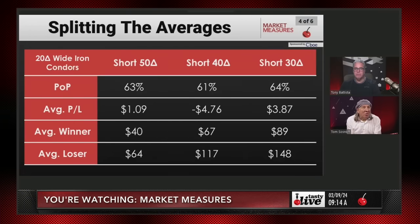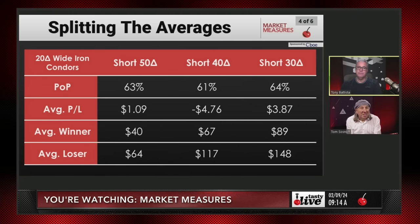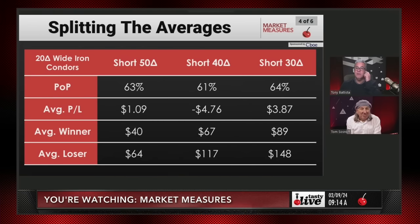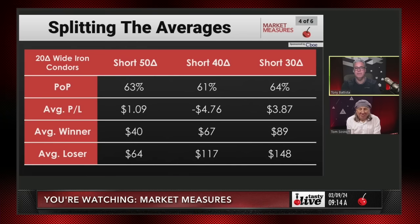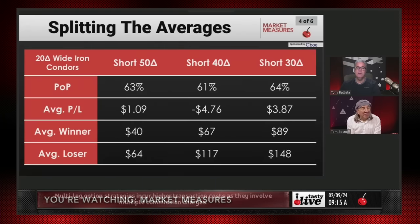So then we go to a wide iron condor — 20 deltas wide. These are really big wide iron condors, like synthetic strangles. If we start with the short 30 delta, which is the closest thing to a short 20 delta strangle, it has the highest POP at 64%, by far the highest P&L, and the highest average winner. It's going to have the highest average loser too because it's the most times in play, but that doesn't really matter because looking at all the other numbers, you're best off being short the 30 delta with the short strike 20 deltas wide. No argument — this is pretty clear cut.